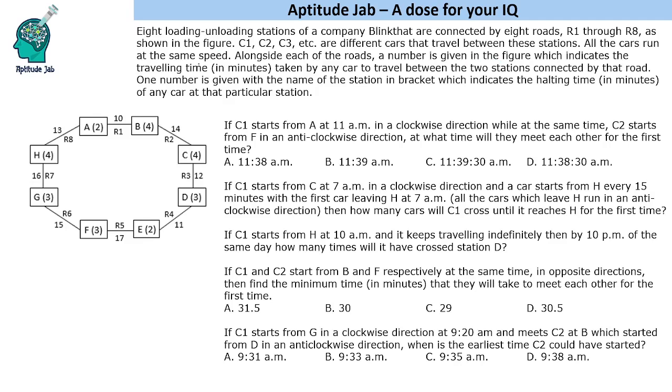C1, C2, C3 are different cars that travel between these stations. All cars run at the same speed. Alongside each road, a number indicates the traveling time taken by any car to travel between two stations connected by that road.